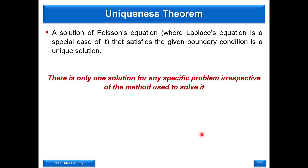Now we move to another method for solving more complex problems: the method of image, which is based on the uniqueness theorem. The uniqueness theorem states that a solution of Poisson's equation — or Laplace's equation as a special case — that satisfies the given boundary conditions is a unique solution. This means that if you keep the same charge distribution and boundary conditions in the area of interest, your solution is unique regardless of what changes outside that area.